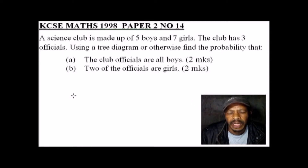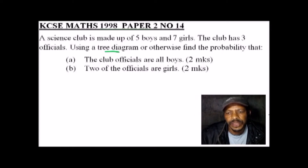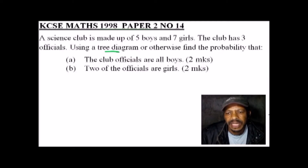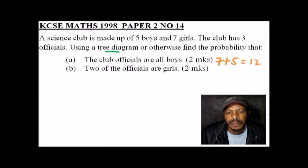The tree diagram is one of the strongest tools we use to solve probability questions. We have seven girls and five boys, so the total number of members in the club is 12. Using that value, we use a two-branch diagram.